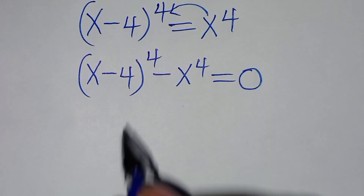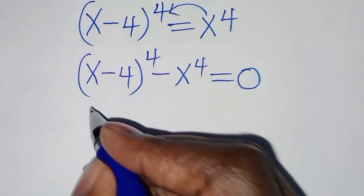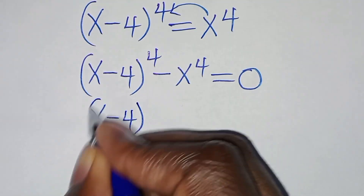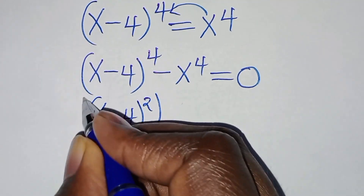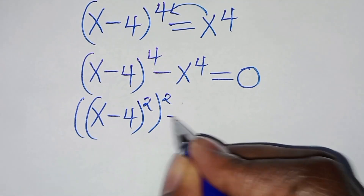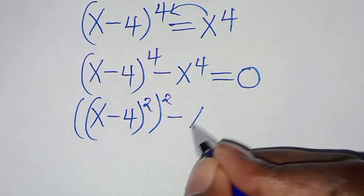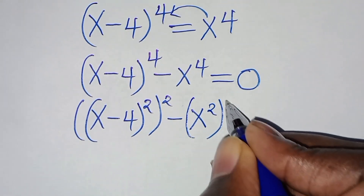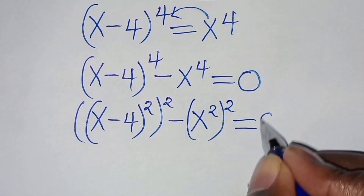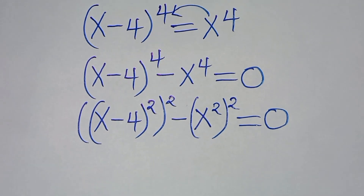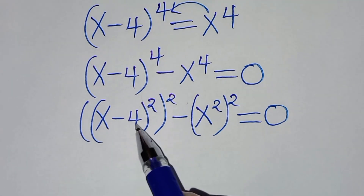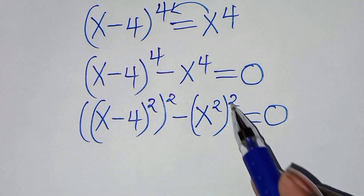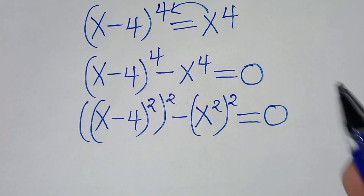So we can express x minus 4 to power 4 as x minus 4 to power 2, then raised to power 2, subtract x to power 4, which is the same thing as x to power 2 raised to power 2, this is equal to 0. So, x minus 4 to power 2, raised to power 2, minus x to power 2, raised to power 2, this is equal to 0.